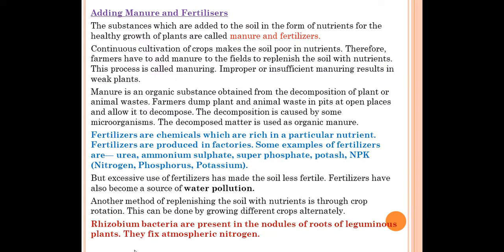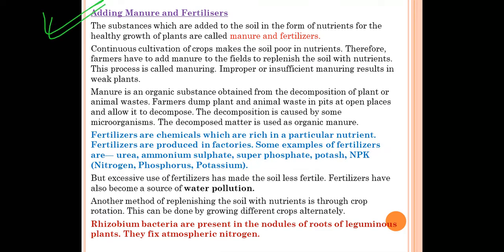The next topic is adding manures and fertilizers. Manures and fertilizers promote the growth of plants and give good yield. The definition: substances which are added to the soil in the form of nutrients for the healthy growth of plants are called manures and fertilizers. If asked in an exam, you can write this same definition.